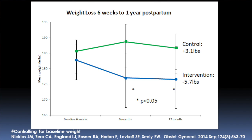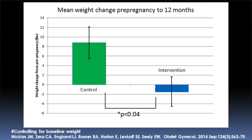We found two things. One is that women in the lifestyle program not only didn't gain weight — they actually lost weight in the one year after delivery, and lost more weight than women in the control group, who actually gained weight. Looking at whether women returned to their pre-pregnancy weight, women who got routine care remained above their pre-pregnancy weight at one year, while women in the lifestyle arm were back to their pre-pregnancy weight at just one year after delivery.